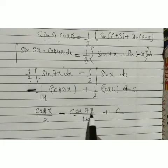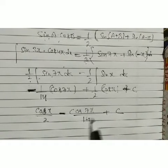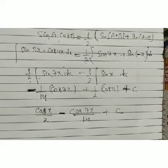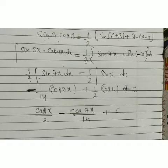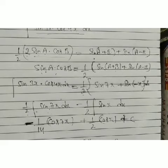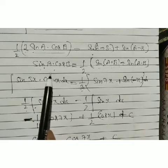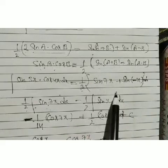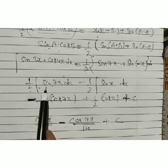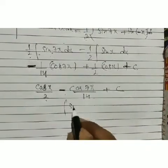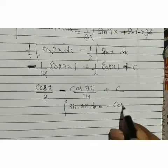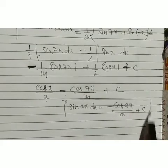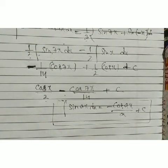So the integration of sin 3x · cos 4x = cos x/2 − cos 7x/14 + C. We used the trigonometric identity sin A · cos B = (1/2)[sin(A+B) + sin(A−B)], then applied the fundamental formula ∫sin ax dx = −cos ax / a.